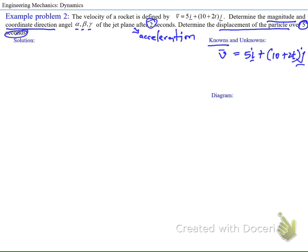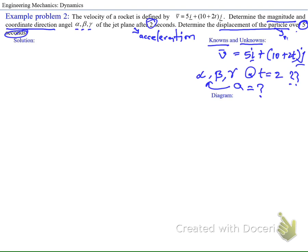The unknowns are alpha, beta, and gamma at time equals two seconds. We also need the magnitude of the acceleration and the direction angle of acceleration at two seconds. And we also need to find the displacement of the rocket after five seconds.